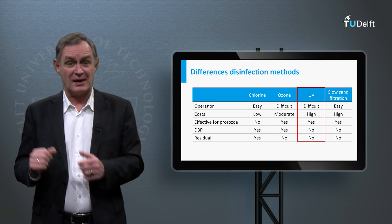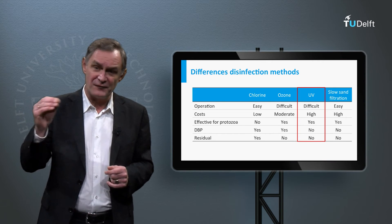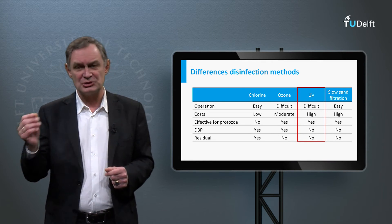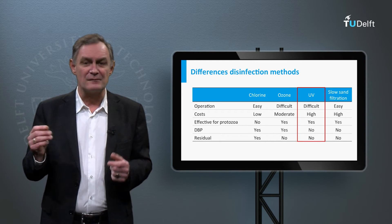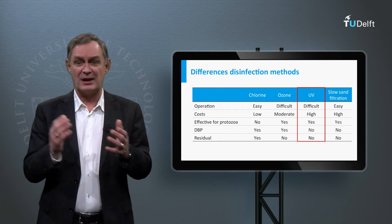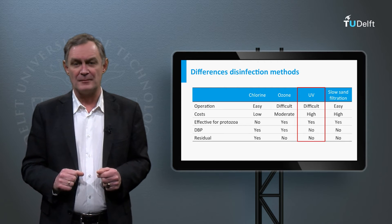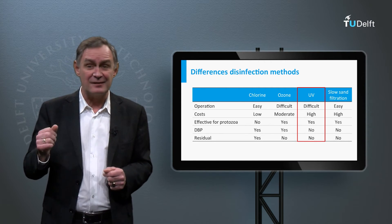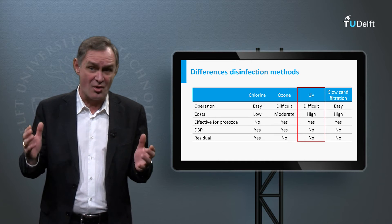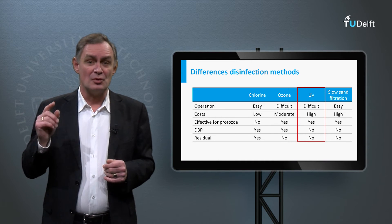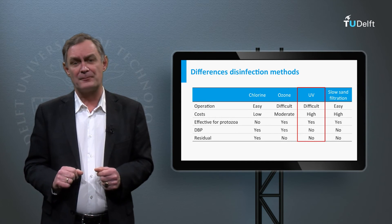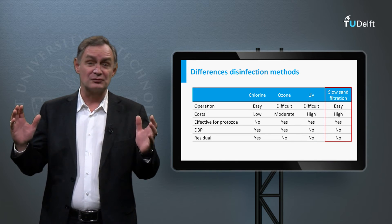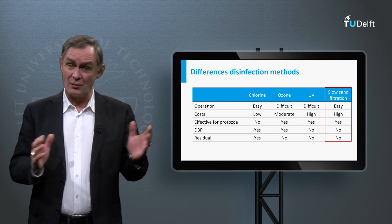For UV disinfection, expensive equipment and specific operational skills are required. Just as ozone, UV is more effective than chlorine for the inactivation of protozoa. The biggest advantage of the method is that, as far as we currently know, no disinfection by-products are formed.